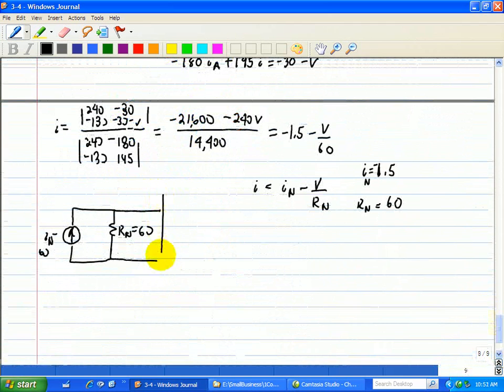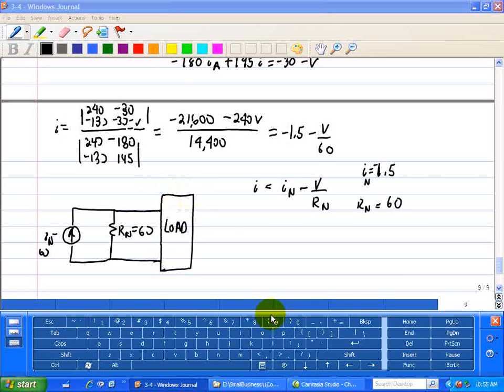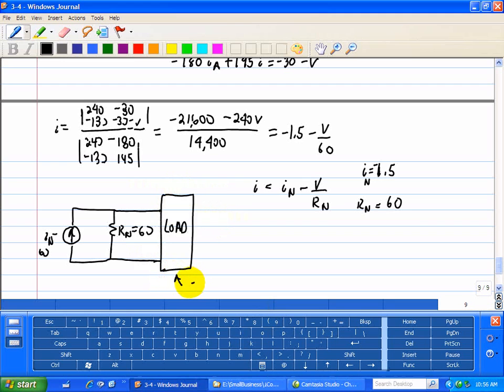Now, we connect this to a load, now let's say we're asked to find the interface current I, when the power delivered to this load is 5 watts. So, we want to see what I is.